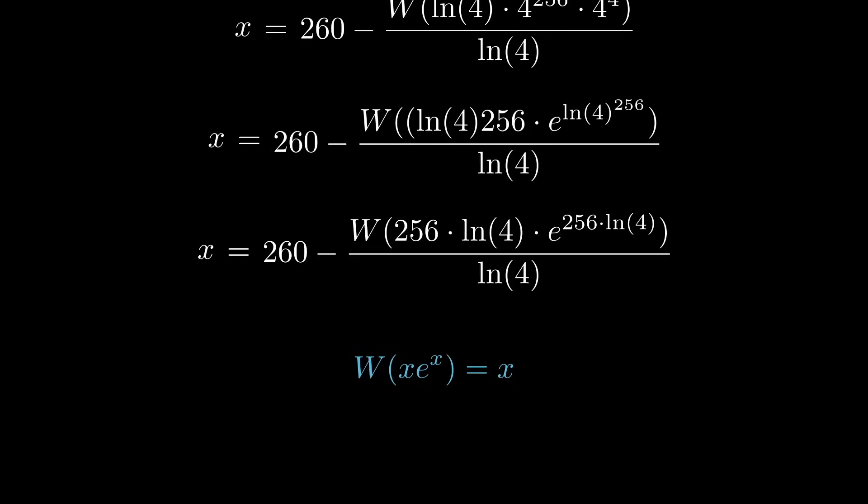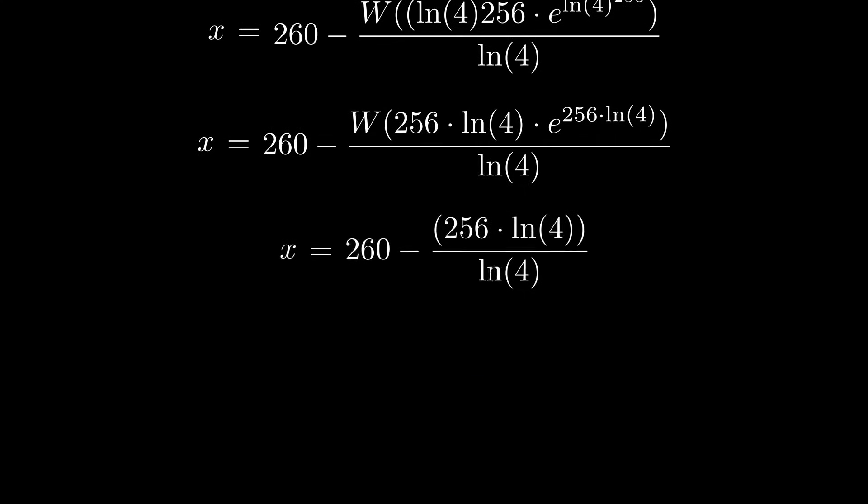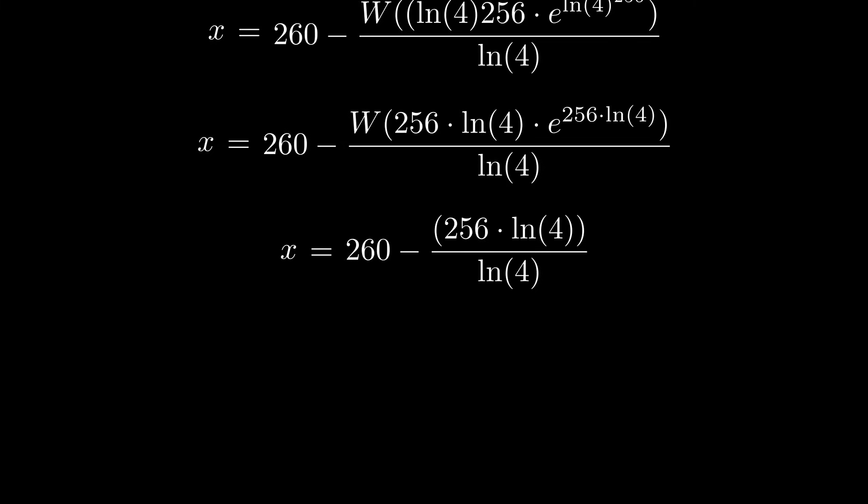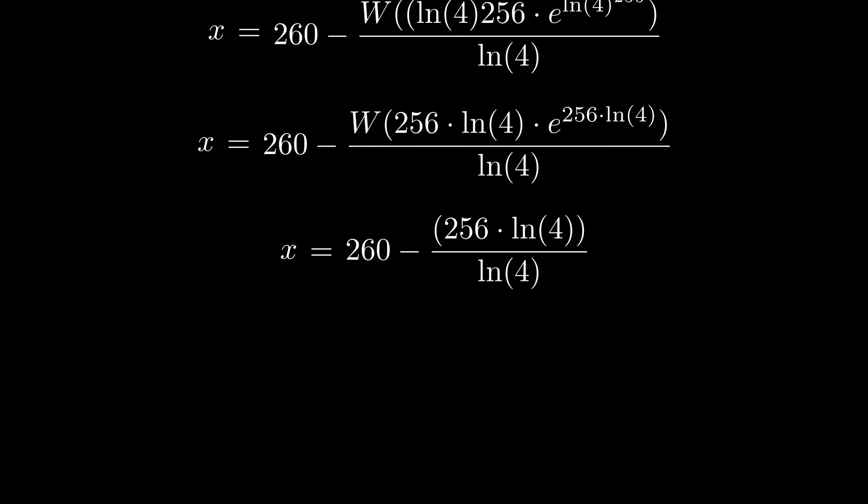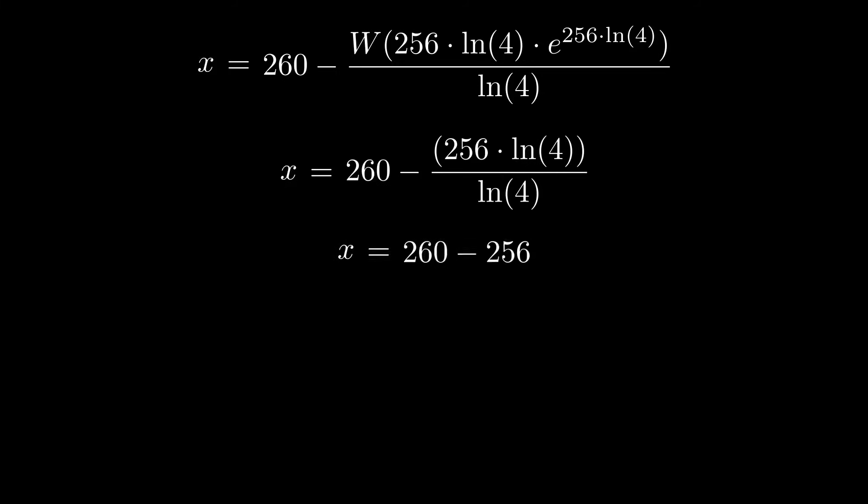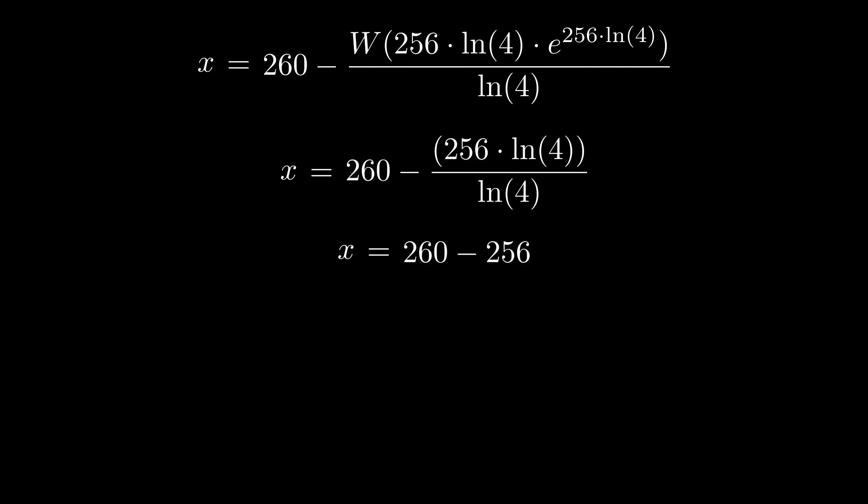In this case, natural log 4 times 256 times e to natural log 4, 256. Meaning that the W function applied to this cancels out. We just get the input, 256 times natural log 4, and we can cancel the natural log 4s, taking the difference to get 4.